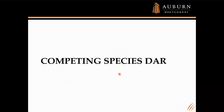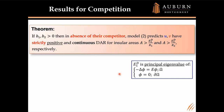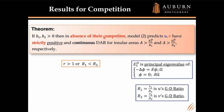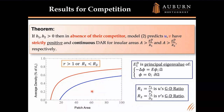Now let me talk about the competing species DAR. The code for competing species is almost identical — NDSolve just needs to handle the Lotka-Volterra system with a few minor modifications. In the absence of a competitor, our model predicts that U and V each have strictly positive continuous DAR. For U in blue, for any patch bigger than its critical area, you'll have a strictly positive continuous DAR. For V in red, similarly, for area larger than its critical value, you'll have strictly increasing positive DAR.